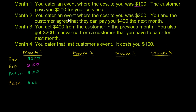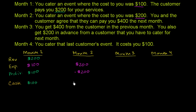In month two, you cater an event where the cost to you was $200. The customer agrees to pay you $400 the next month. So we have to use $200 — that's going out as an expense. But we don't get any revenue because on the cash basis, the customer is not paying us that month; they're paying $400 the next month. So it looks like we got no revenue and had $200 of expenses. Our profit is negative $200. We had $100 of cash entering month two, we're using $200, so now we've overdrawn — we owe the bank $100.